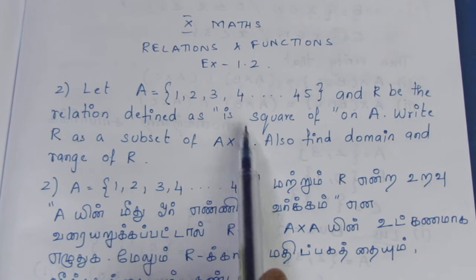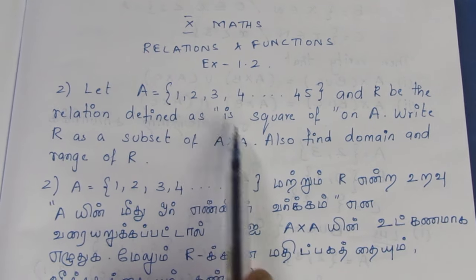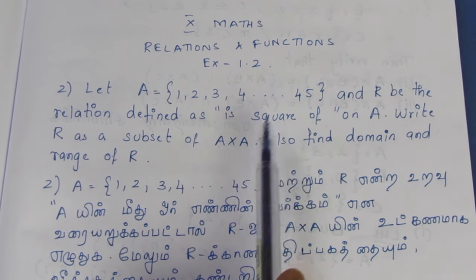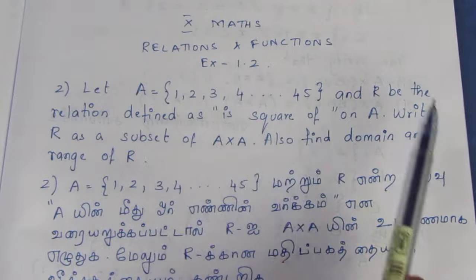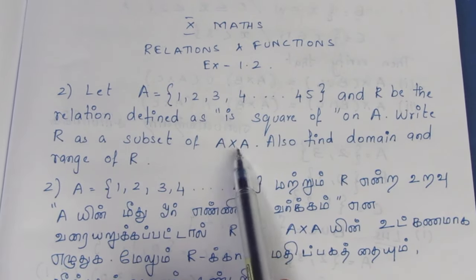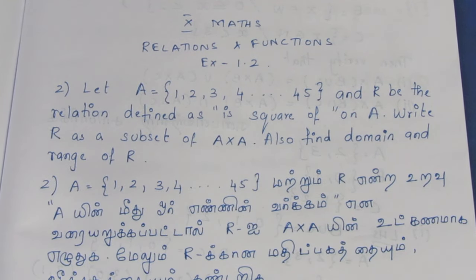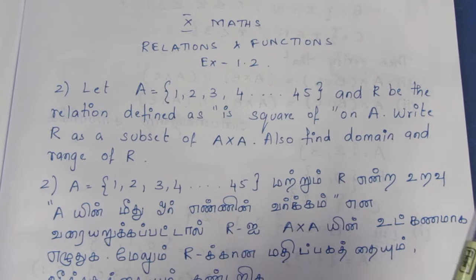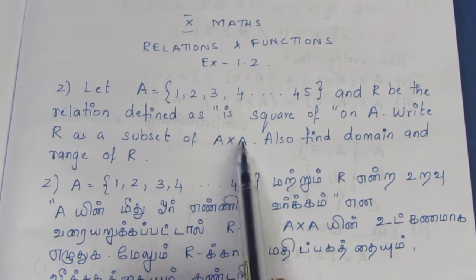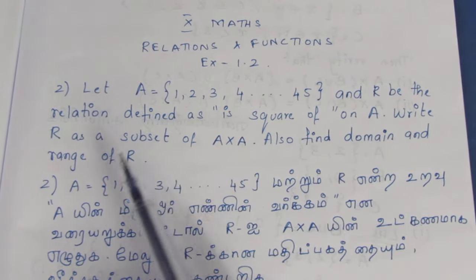Because we can do a cross product: if you get a number and its square, the two are related in the same way. We also have to find the domain and range of R.